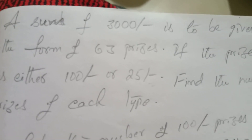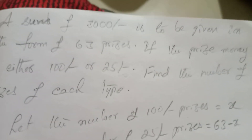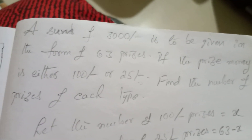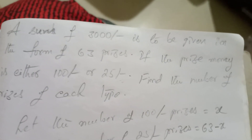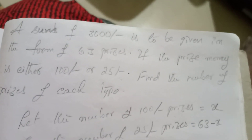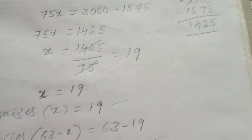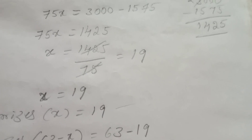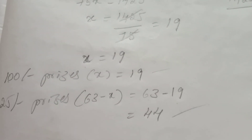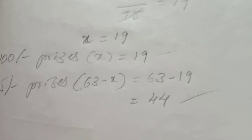To verify: 3,000 rupees distributed as 63 prizes of either 100 or 25 rupees. There are 19 prizes of 100 rupees and 44 prizes of 25 rupees.